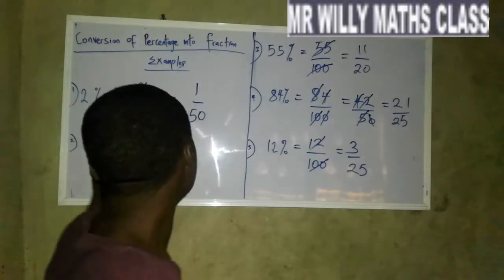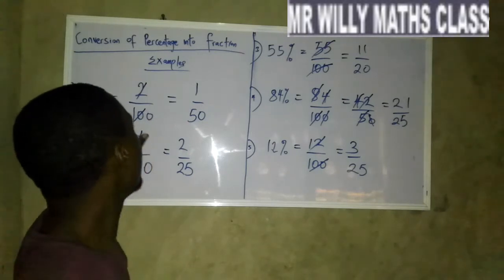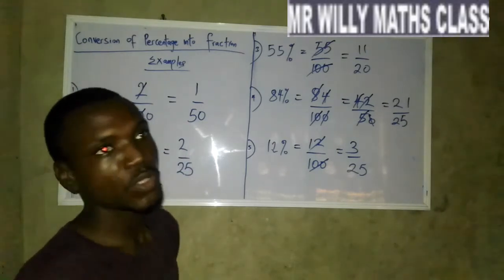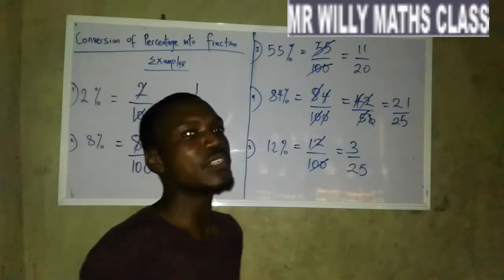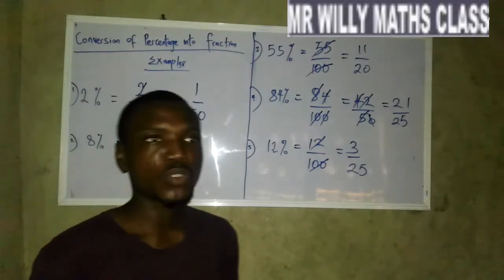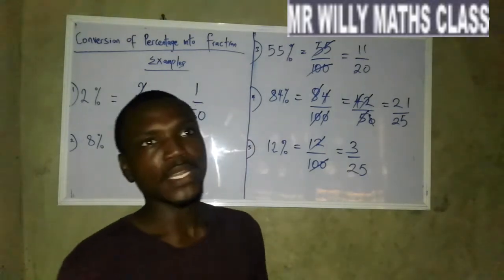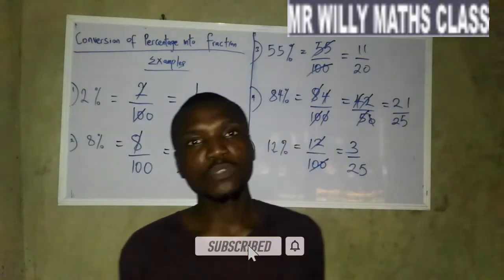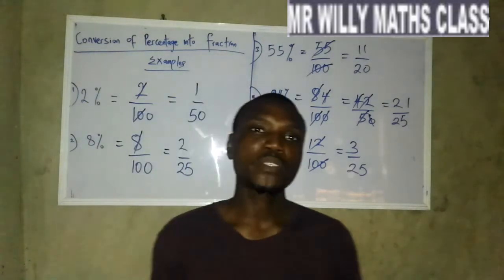It's as simple as ABC. All you need to do is change the percentage to a fraction by dividing by 100, then you break it down with a common factor. You stop when the numerator and denominator don't have a common factor. We have come to the end of the class. If you are here, like this video, hit the like button, you can share with your friends. Thank you for being part of this class.